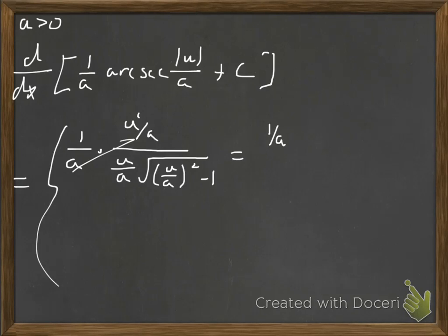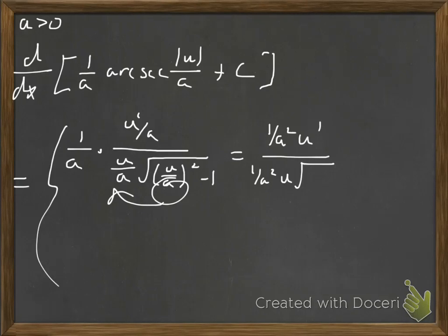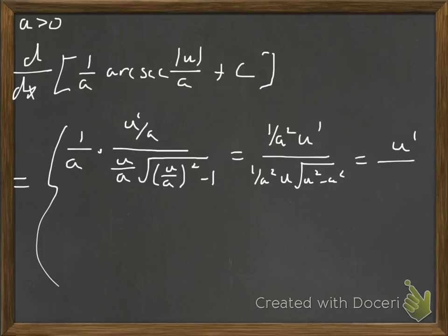We're going to have 1 over A squared when combining those terms, times U prime divided by — in the denominator, there's an A squared that comes out of the square root, and taking the square root of A squared just gives A. Combined with the preexisting A that gives us A squared. Then we have U in the denominator and in the square root it's U squared minus A squared. That gives us U prime divided by U times the square root of U squared minus A squared — for the case where U is positive.